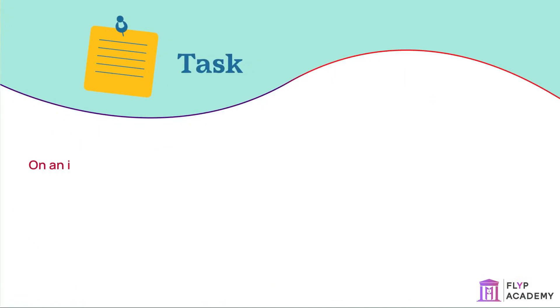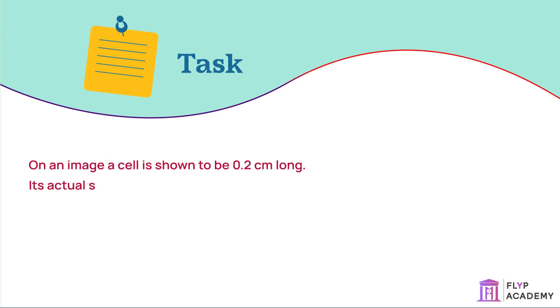Task: On an image, a cell is shown to be 0.2 cm long. Its actual size is 1 nm. Calculate the magnification.